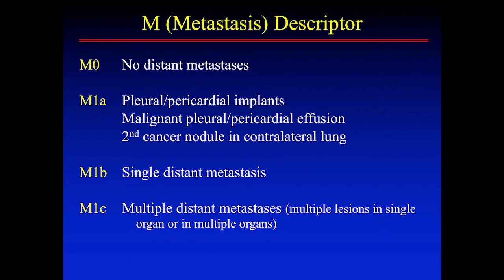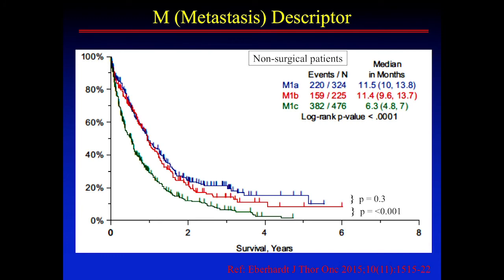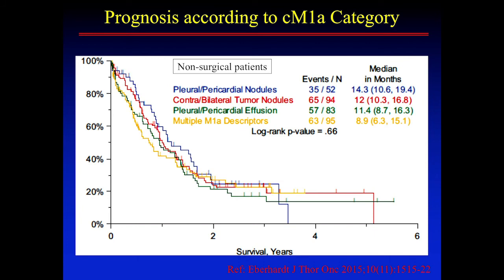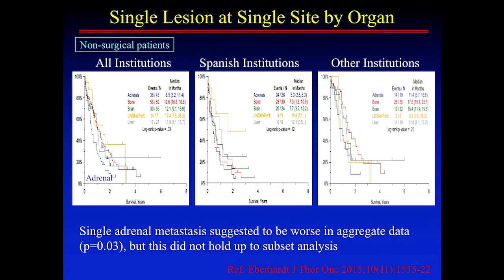The M category has been subdivided into M1a, M1b for a single distant metastasis, and M1c for multiple distant metastases — that's a change from before. Looking at the survival curves for M1a, M1b, and M1c categories, for a single metastasis it didn't really matter where it was located. There was one analysis suggesting adrenal might be worse, but that didn't hold up on other subset analyses. Importantly, these analyses were all on non-surgically managed patients — not patients managed with curative intent for oligometastatic disease.